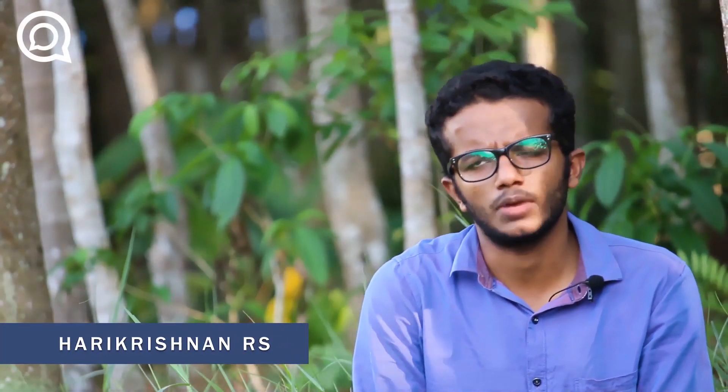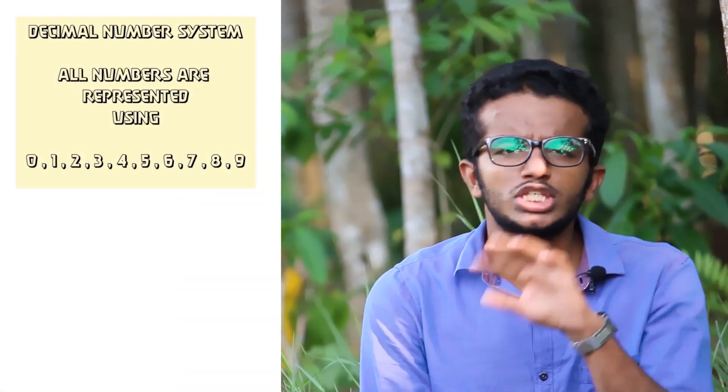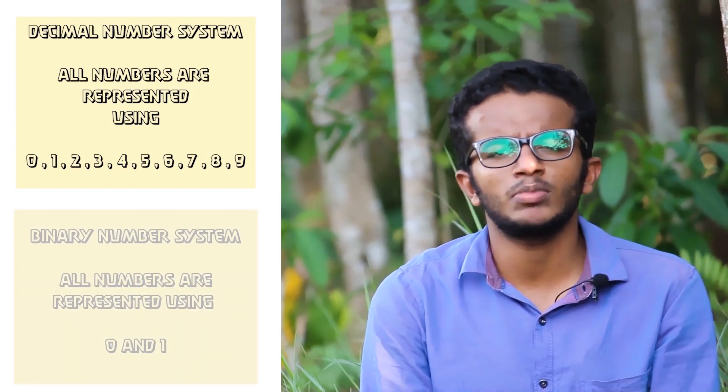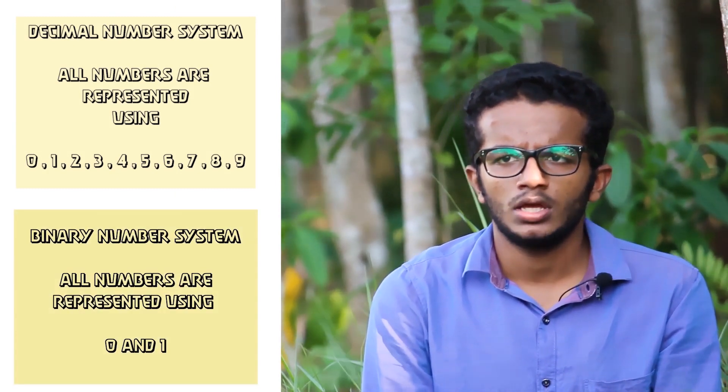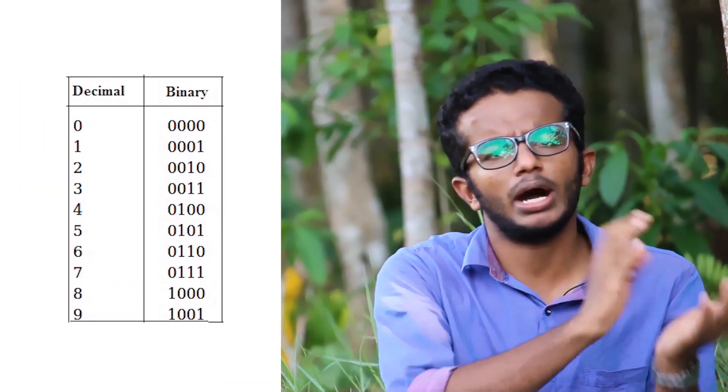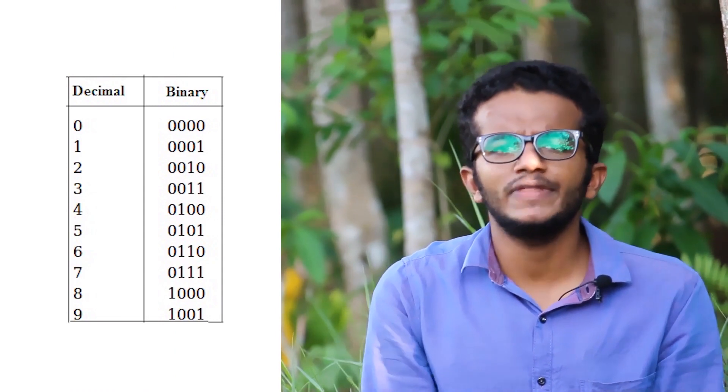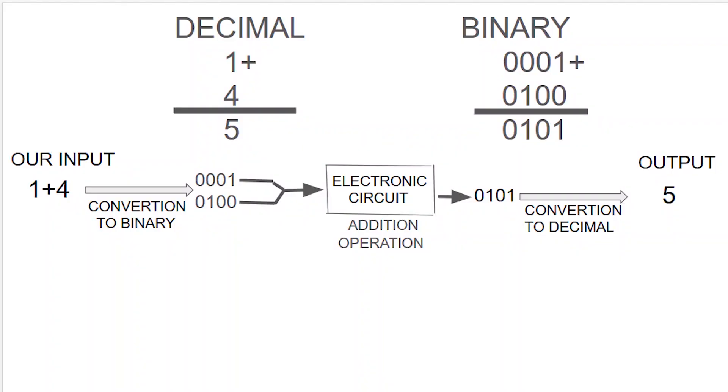Let's talk about computer properties. We have a decimal number system and we have a binary number system. Let's talk about one or another operation. We do have a binary number system — we just call the decimal number system.